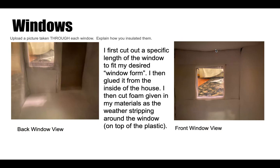For my windows, I used the same material but the procedure was different. I first cut out the plastic used for the window, making sure that the measurement was bigger than the actual cutout so no air would be slipping out accidentally. After I glued it onto the cutout, I put foam on top of the plastic, and over the plastic I put the poster board.